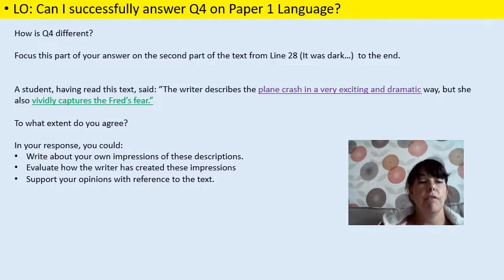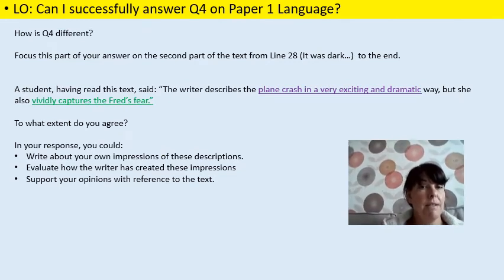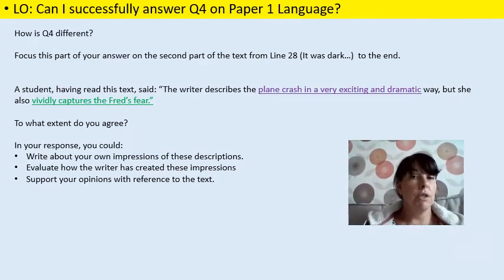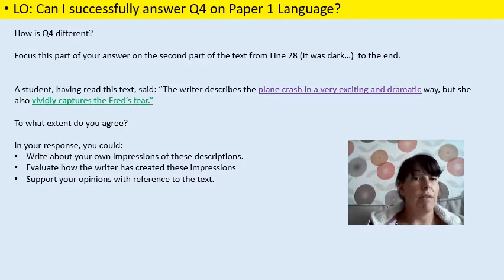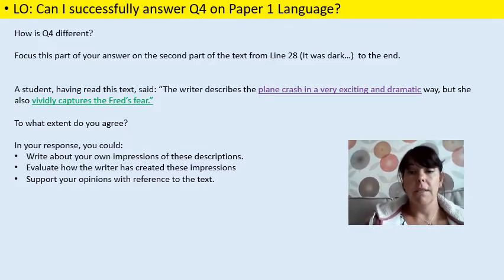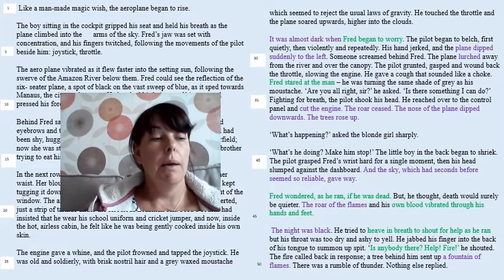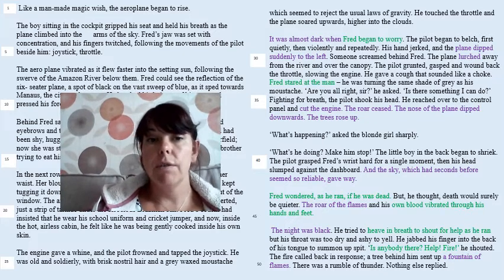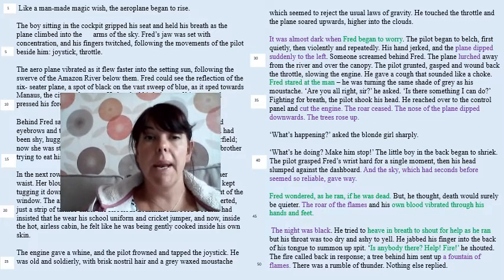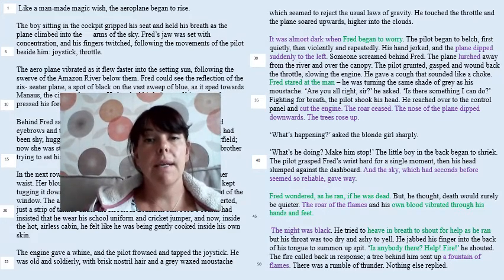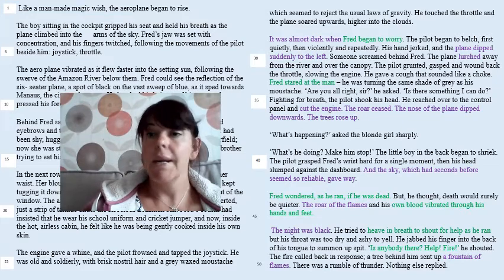One thing to be careful of here: there are lots of examples of the other children on the plane being frightened, so just make sure you don't select any of those quotes. It's got to be relevant textual evidence — make sure you're really focused on examples that Fred is frightened. How does your selection of evidence compare to mine? You can see I've colour coded and picked out a range of things to show the drama and excitement of the plane crash and that Fred is really frightened.